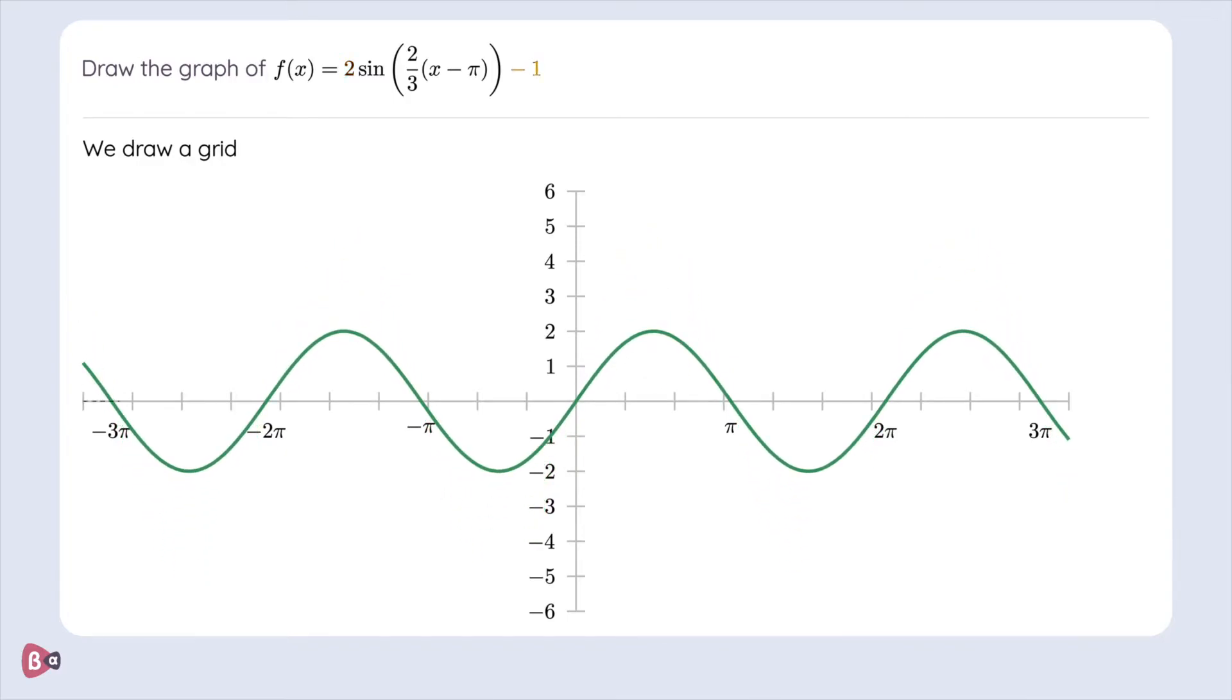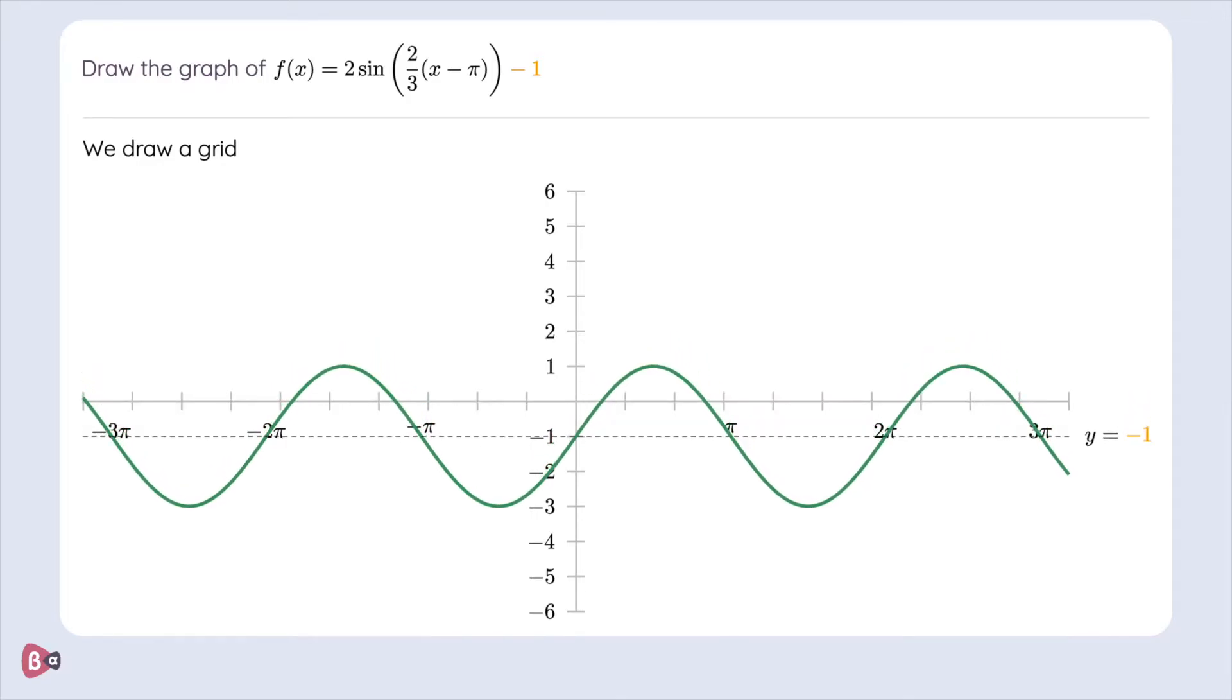Next up we'll inspect the minus 1. The minus 1 determines the equilibrium. In our case we'll have an equilibrium of minus 1 so we'll move it over.